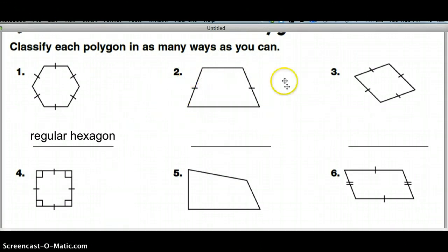Number two. Another polygon. This one isn't regular because all the sides aren't the same length. It's just those two are. The description I can look at is it has one pair of parallel sides, which makes it a trapezoid. And that's all you could use for number two to describe it.